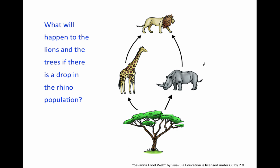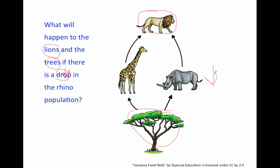What will happen to the lions and the trees if there is a drop in the rhino population? So what will happen to the lions and trees if there is a drop? Drop means to decrease in the rhino population. What will happen to the lions and the trees if there is a drop in the rhinos? Go ahead and pause the video at this time.